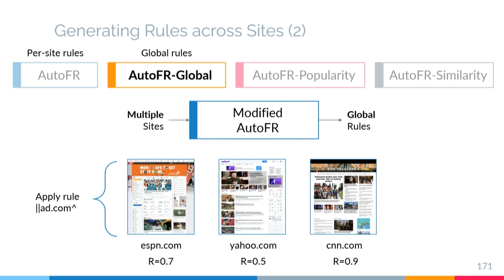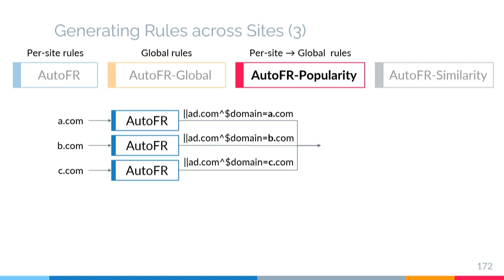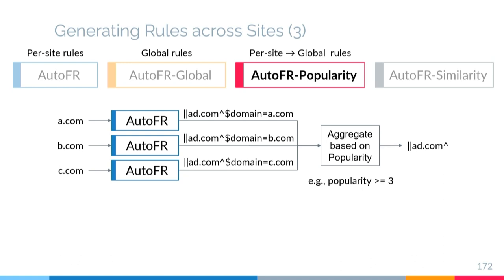The next approach, we call AutoFR Popularity. We rely on AutoFR to generate per-site rules for our set of known sites and then aggregate them based on a popularity threshold. For example, if the same per-site rule was created by three different sites and we choose a popularity threshold of three, then it meets the criteria to become a global rule.